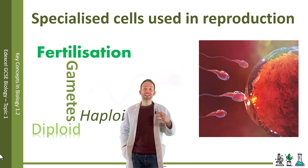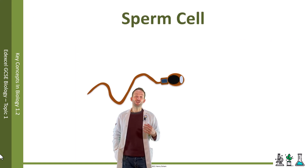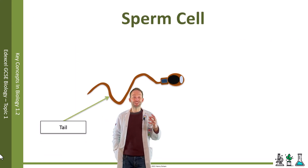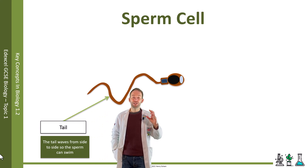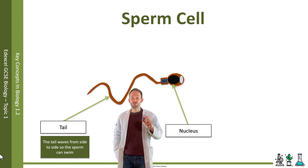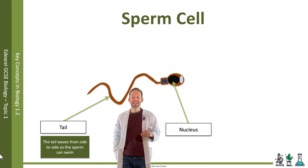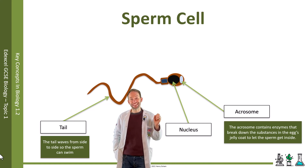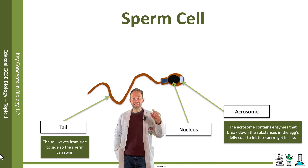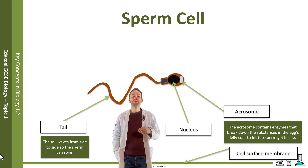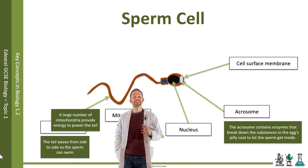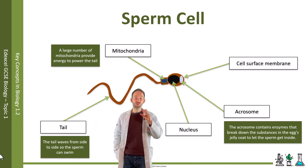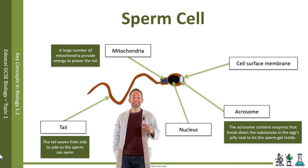This is the structure of a sperm cell. As you can see, it's got a tail, which it uses for swimming, so it's highly adapted. It's got a nucleus, which contains half the genetic material; an acrosome, which contains enzymes that break down the substances in the egg's jelly coat so the sperm can get in; a cell surface membrane; and mitochondria — loads of them, packed in to provide the energy for the tail.